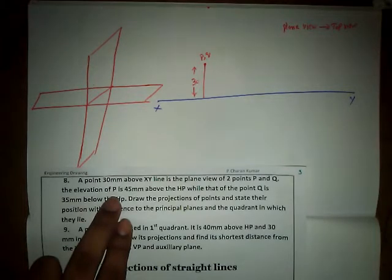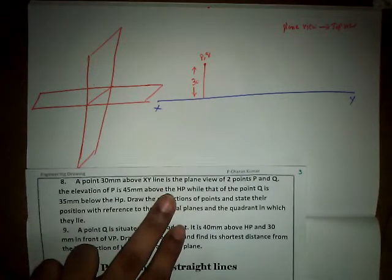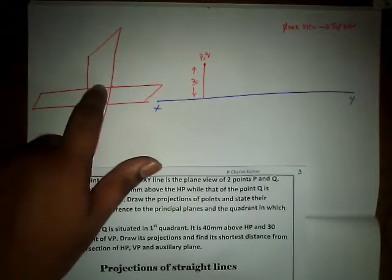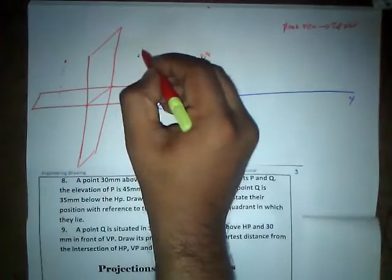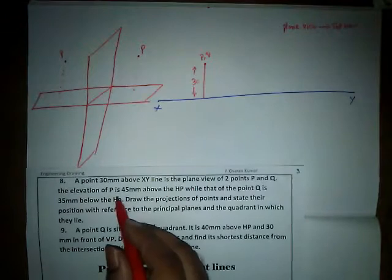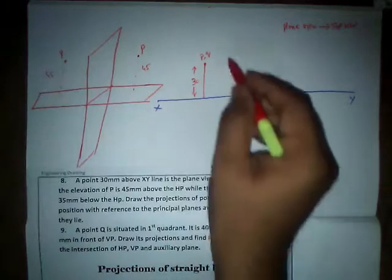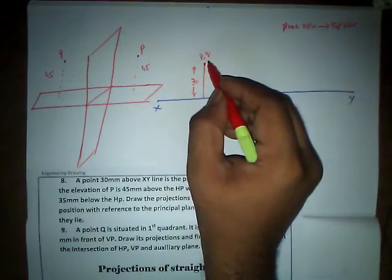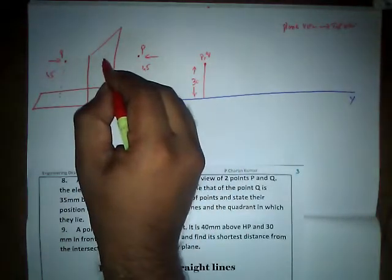Next, the elevation of P — elevation meaning height — is 45mm above HP. Above HP means the point can be in different positions. The distance given is 45mm. We already have the top view, so we need to find the front view. Viewing from the front, we get P' at 45mm above XY on the vertical plane.